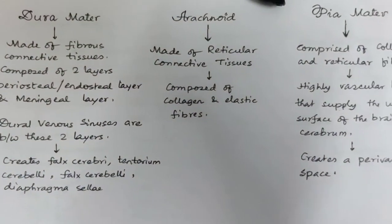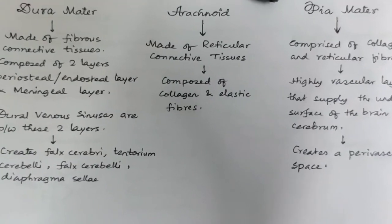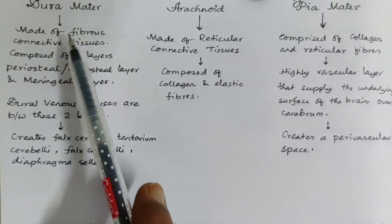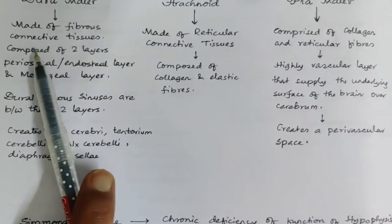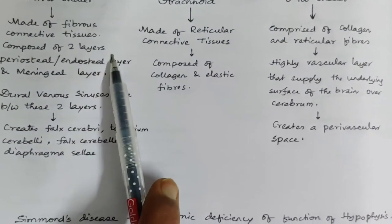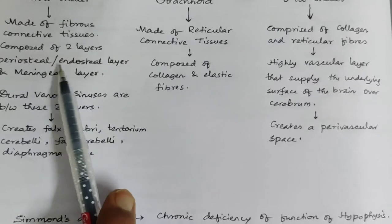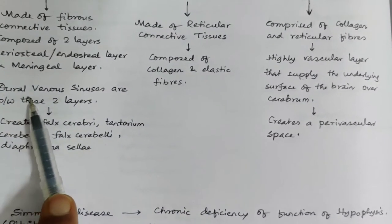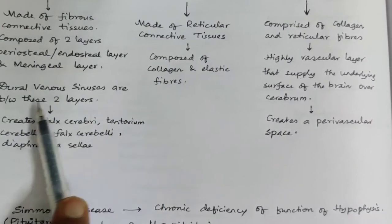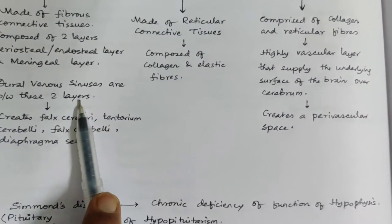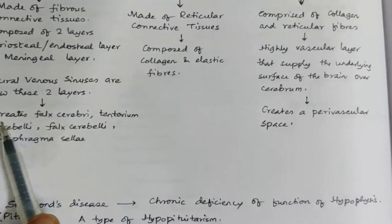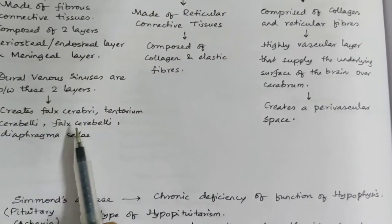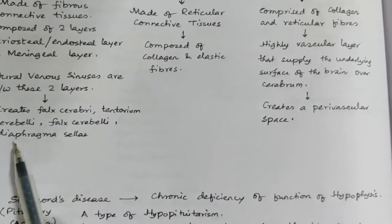The meninges consist of dura mater, arachnoid, and pia mater. Dura mater is made up of fibrous connective tissue composed of two layers: the periosteal (endosteal) layer and the meningeal layer. It contains dural venous sinuses between these two layers, and creates the falx cerebri, tentorium cerebelli, falx cerebelli, and diaphragma sellae.